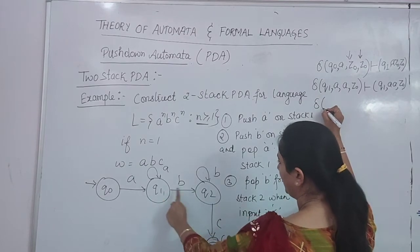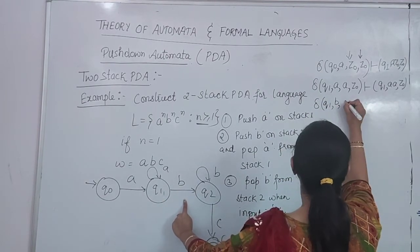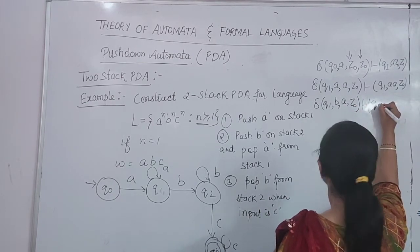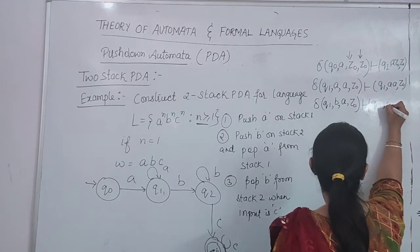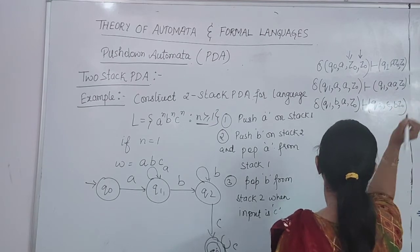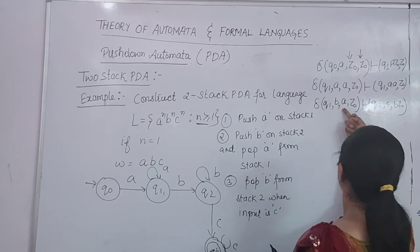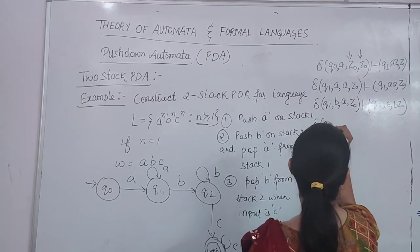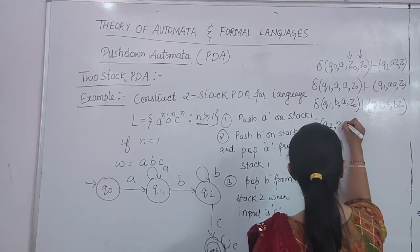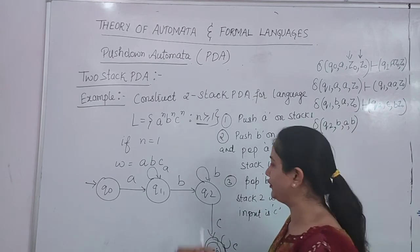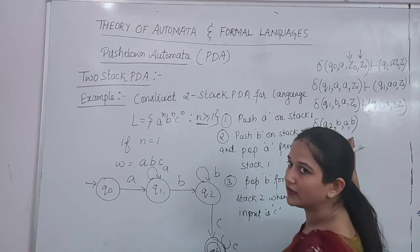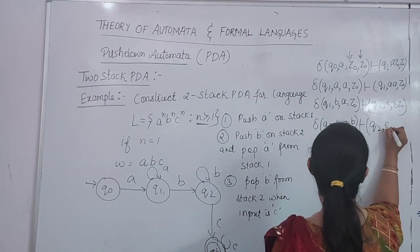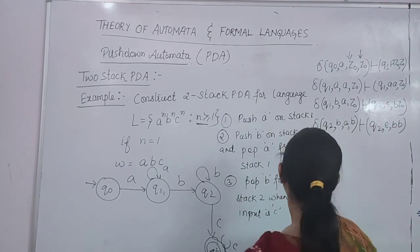Now at state Q1, if we read B and A is the top of stack 1, and stack 2 still has Z0, then we enter state Q2 and pop A out from stack 1 — replacing A with epsilon — and push B onto stack 2. Again if we are at state Q2 and we read B again, and B is already on stack 2, for more number of Bs the condition should be that B is already there, so we keep the loop at the same state and pop out B and push B — keeping B and B.